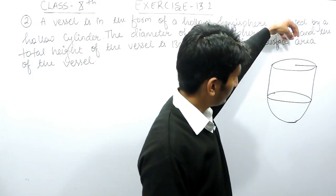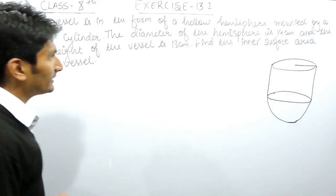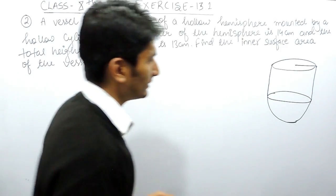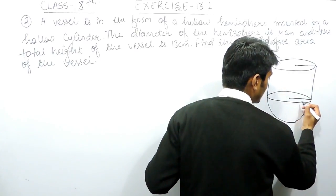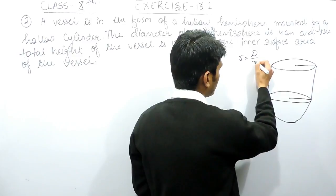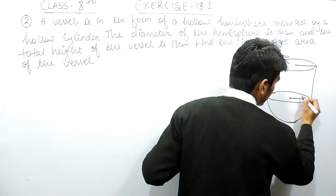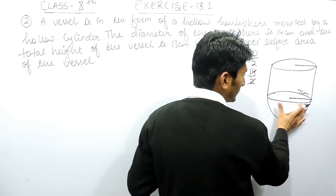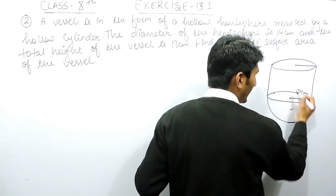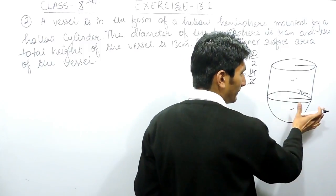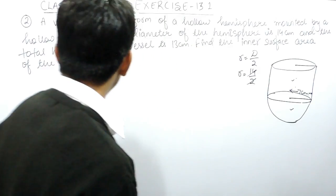The inside of this vessel is empty. The diameter of the hemisphere is given as 14 centimeters, so the radius is half of the diameter, which gives us 7 centimeters. Since the cylinder is mounted on the hemisphere, the radius of the hemisphere and the radius of the cylinder will be the same — 7 centimeters.